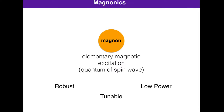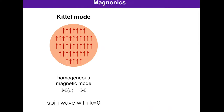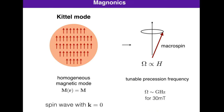Magnons are tunable, for example in frequency, and they can have very low dissipation, so they are useful also in terms of energetics. The Kittel mode — the mode I will be talking about — is: if you take a magnetically ordered material and consider that all spins are locked together, you can excite a mode in which all spins precess in phase. It's like they form a big macro spin — a homogeneous magnetic mode that doesn't depend on space.